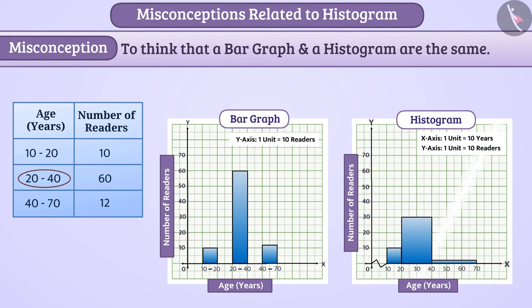If we look in the histogram, we find the distribution of the number of readers in the age of 10 to 40.